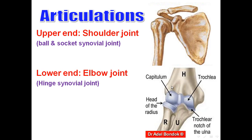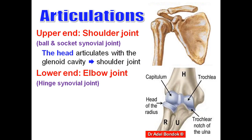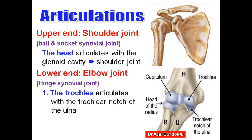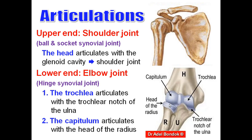Regarding articulations of the humerus: the upper end forms the shoulder joint and the lower end forms the elbow joint. The head of the humerus articulates with the glenoid cavity of the scapula to form the shoulder joint, which is a ball-and-socket synovial joint. The lower end articulates with the ulna and radius to form the elbow joint, which is a hinge synovial joint permitting flexion and extension only. The trochlea articulates with the trochlear notch of the ulna, and the capitulum articulates with the upper surface of the radius. The coronoid fossa lodges the coronoid process during flexion; the radial fossa lodges the head of the radius during flexion.